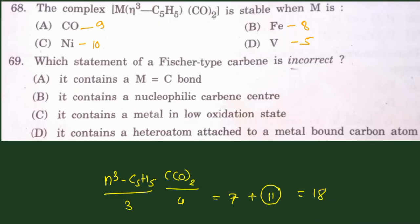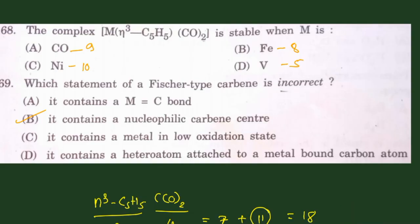Question 68: the complex [M(η3-C5H5)(CO)2] is stable when M is identified using the EAN rule. η3 donates 3 electrons and 2 CO donate 4 electrons total, giving 7 electrons from ligands — so 11 electrons are needed from the metal for an 18-electron stable system. Among cobalt, nickel, iron, and vanadium, the question is assessed. Question 69: Fischer carbene is electrophilic, not nucleophilic — so the nucleophilic statement in the option is wrong and that becomes the correct identification.